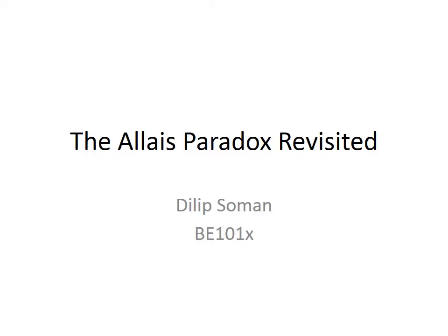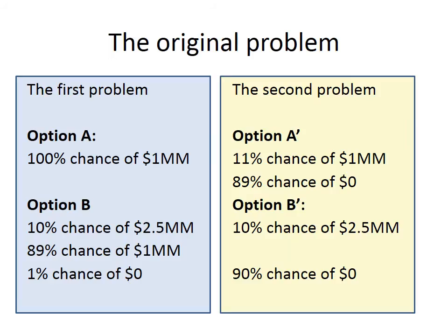If you recall, this was the original problem statement. In the first problem, the first choice participants were presented with: Option A was a 100% chance of getting $1 million. Option B was a gamble — 10% chance of $2.5 million, 89% chance of $1 million, and 1% chance of nothing.